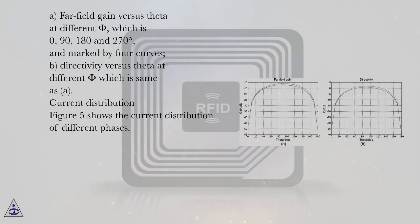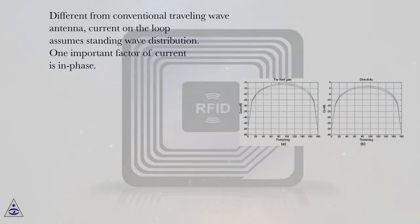Current distribution. Figure 5 shows the current distribution of different phases. Different from conventional traveling wave antenna, current on the loop assumes standing wave distribution.